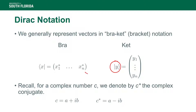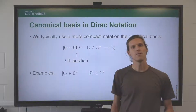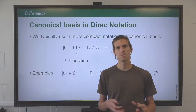The bra notation for coefficients x1 to xn is a row vector, and you have to pay attention that its entries are the complex conjugates. As a quick recap, the complex conjugate of a complex number of the form a + ib — denoted c* — is a − ib.